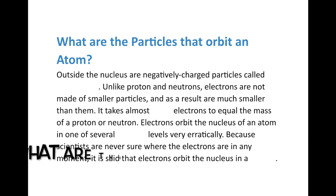What are the particles that orbit an atom? Outside the nucleus are negatively charged particles called electrons. Unlike protons and neutrons, electrons are not made of smaller particles — electrons are just electrons — and as a result they are much, much smaller. It takes almost 2,000 electrons to equal the mass of a single proton or neutron. Electrons orbit the nucleus not in neat little rings, but rather in several energy levels very erratically. We use models of statistical probability to figure out where they might be at any given time.